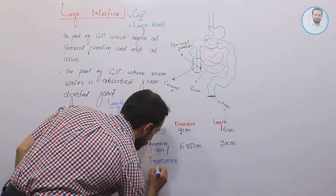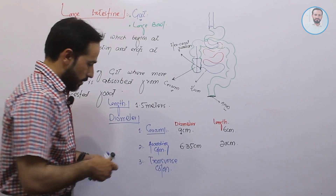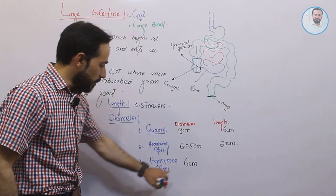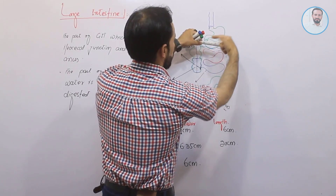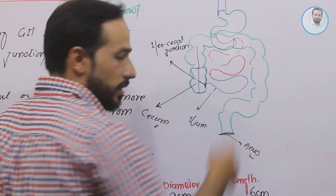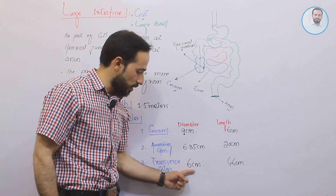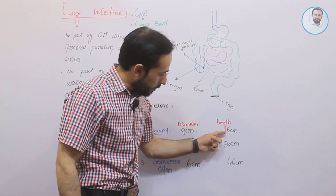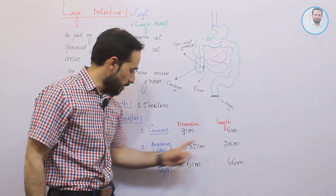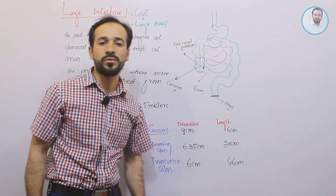The third part is the transverse colon. Its diameter is about 6 centimeters and its length is about 46 centimeters. So as we go along, the diameter gradually decreases while the length gradually increases: cecum 6 cm, ascending colon 20 cm, transverse colon 46 cm.